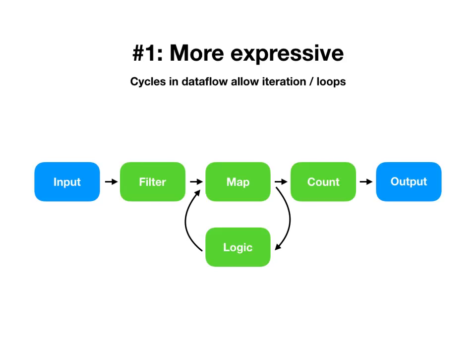Repeating that process will generate all prefixes of strings — not the best way to do it, but it makes a simple example. Why is this new to timely dataflow? Why wouldn't existing dataflow systems do something like this? Let's see what goes wrong when we try to use the standard approach to determining whether times have progressed in a dataflow system with cycles.